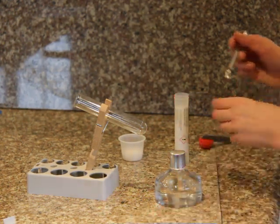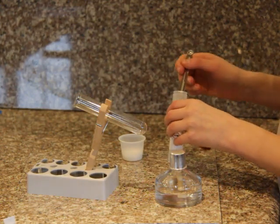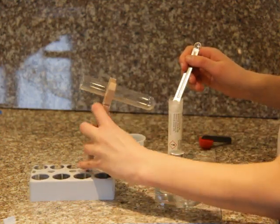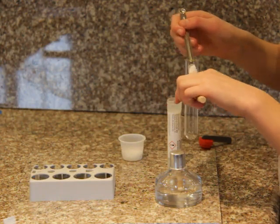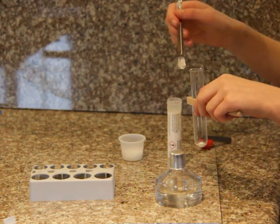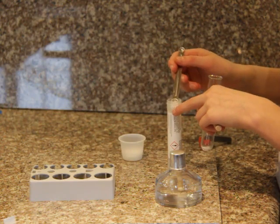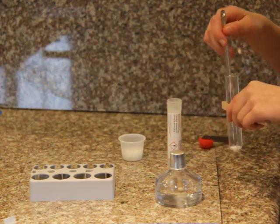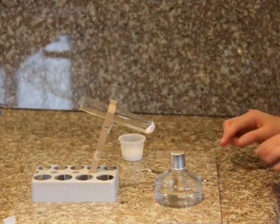To begin, measure two spoonfuls of ammonium chloride into the clean dry test tube. Be sure to clean your measuring spoon in between chemicals. To close the chemical vial, just press the lid firmly on.